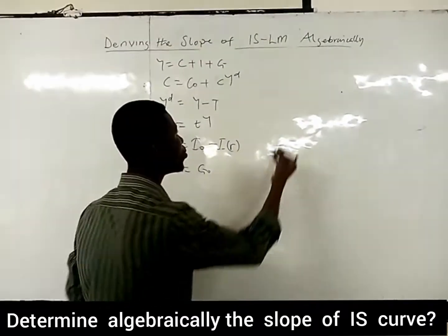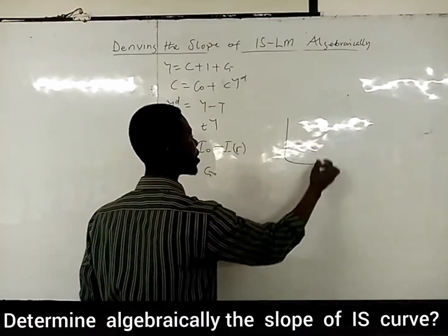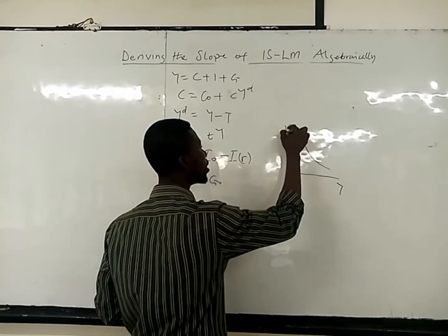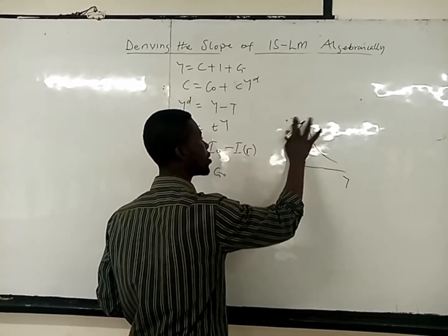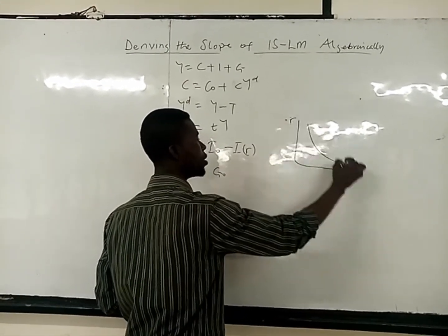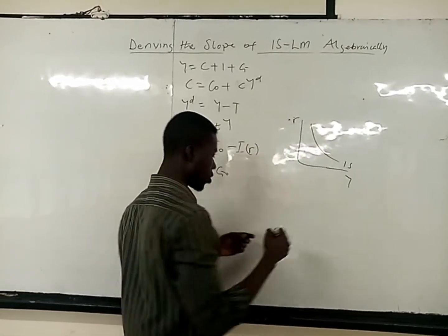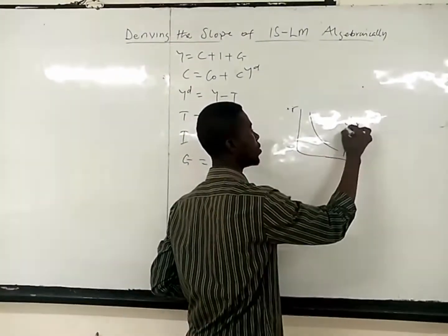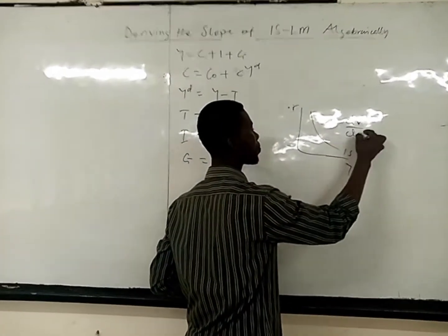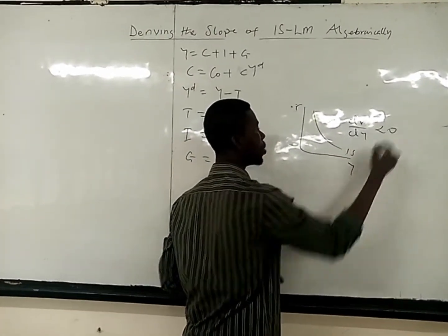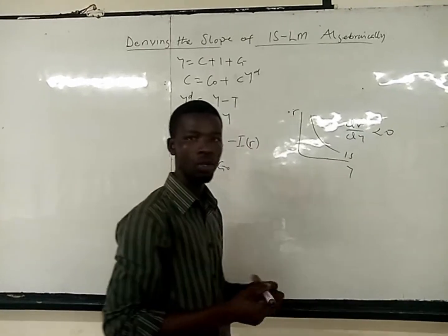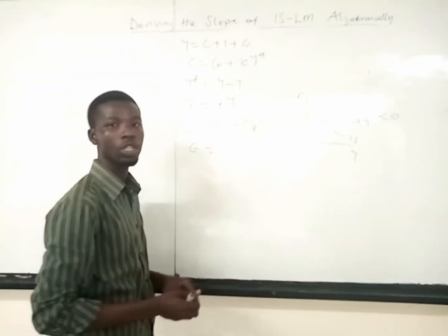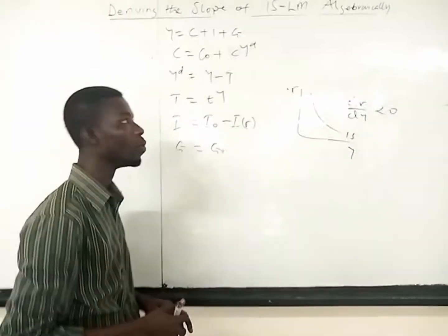So as we know, the IS has a negative slope. This is the IS curve, and we are going to derive that the slope should be less than zero. Using the graphical form, we are now going to use the algebraic form.